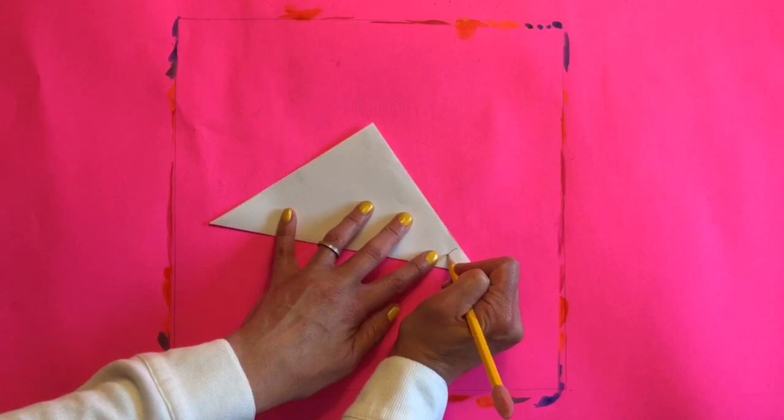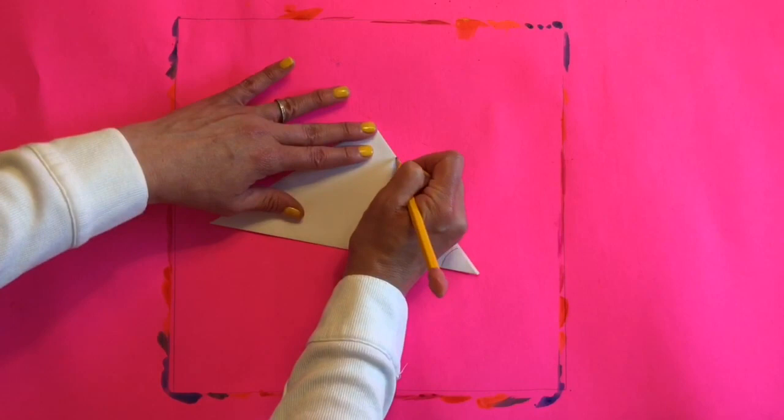Then draw curving lines starting in the right corner going to the left corner, creating C shapes as you draw. Make sure there's space like this between each line.